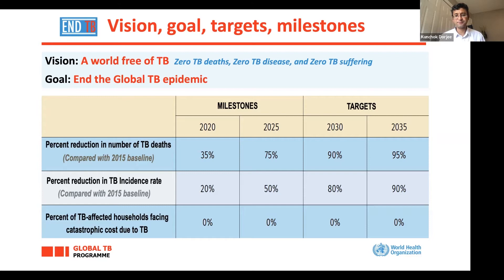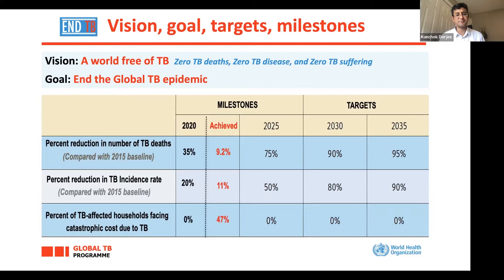We have separate targets for 2025 as well. But let's look at 2020 since we just passed it. We wanted to reduce TB deaths by 35%; we managed only 9.2% compared to the 2015 baseline. Incidence rate, we reduced by 11%. For catastrophic costs due to TB, only a 47% reduction compared to what we hoped. We are really far from getting there, though we've made some progress. And over the last two years, COVID-19 has really reversed a lot of that progress.